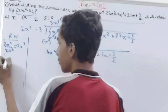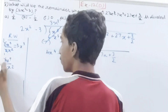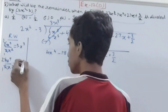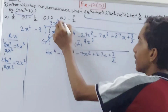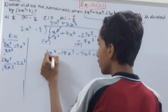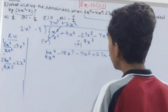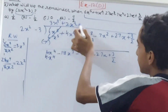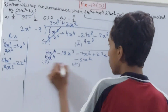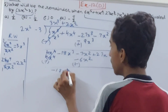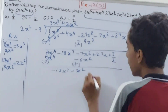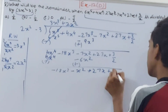Now 4x to the power 4 divided by 2x squared: 4 divided by 2 is 2, and x to the power 4 divided by x squared is x squared, so 2x squared is our second term. Multiply: 2x squared into 2x squared gives 4x to the power 4, and 2x squared into minus 3 gives minus 6x squared. Change the signs, so 4x to the power 4 cancels. Bringing down: minus 18x cubed, minus 7x squared plus 6x squared gives minus x squared, plus 27x plus 3/2.